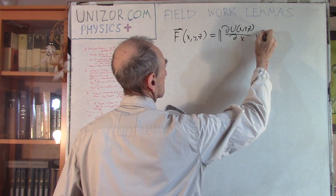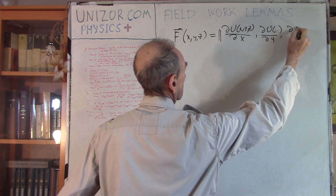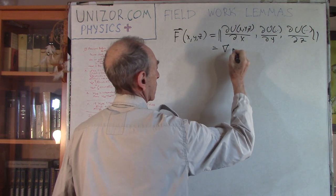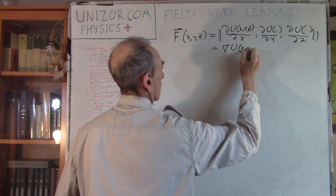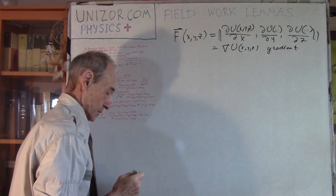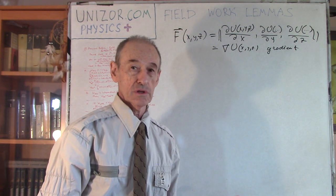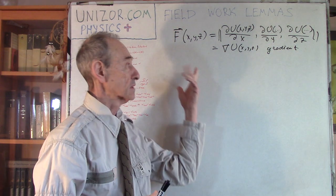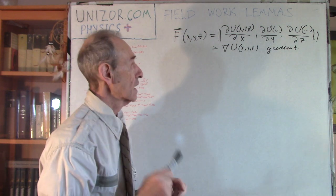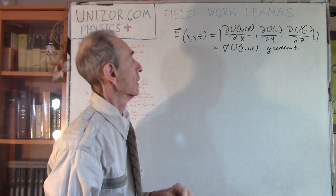The field intensity force at any point is actually a vector of partial derivatives of the potential function — by dx, dy, and dz — which is also called the gradient of function u. So basically, we have defined that the field is conservative and the intensity force is a real field intensity in case there is a function called potential, the gradient of which is equal to the force.